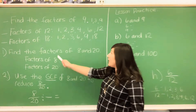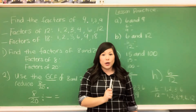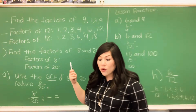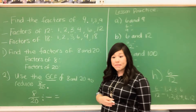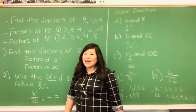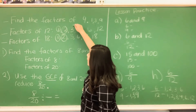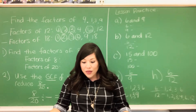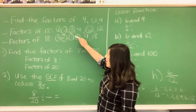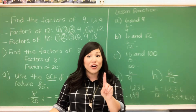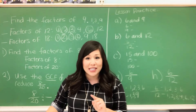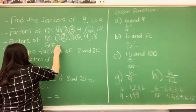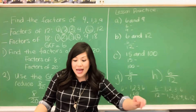Now let's look at the factors of 18. The factors of 18 are 1, 2, 3, 6, 9, and 18 — numbers that can be multiplied together to give you 18. Now, what factors do both of these numbers have in common? The number 1 is a common factor, so I'm going to circle these two. They both have 2, so we're going to circle 2. They both have 3, and they both have 6. The common factors are 1, 2, 3, and 6. However, the GCF — greatest common factor — for both of these numbers is 6. The greatest common factor for 12 and 18 is 6.